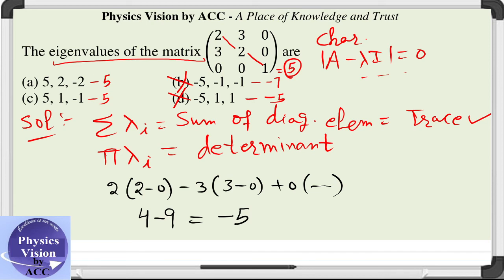Now we should find the option in which the product of the eigenvalues is minus 5. In option a, the product is minus 20, so that is not the correct answer. But here we got the product as minus 5, so option c is the correct answer to this question.